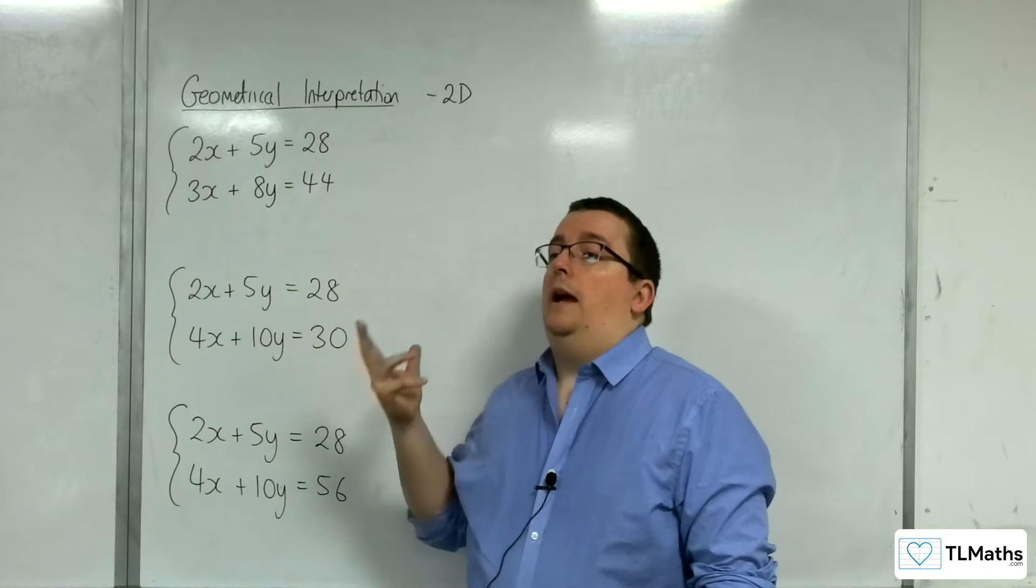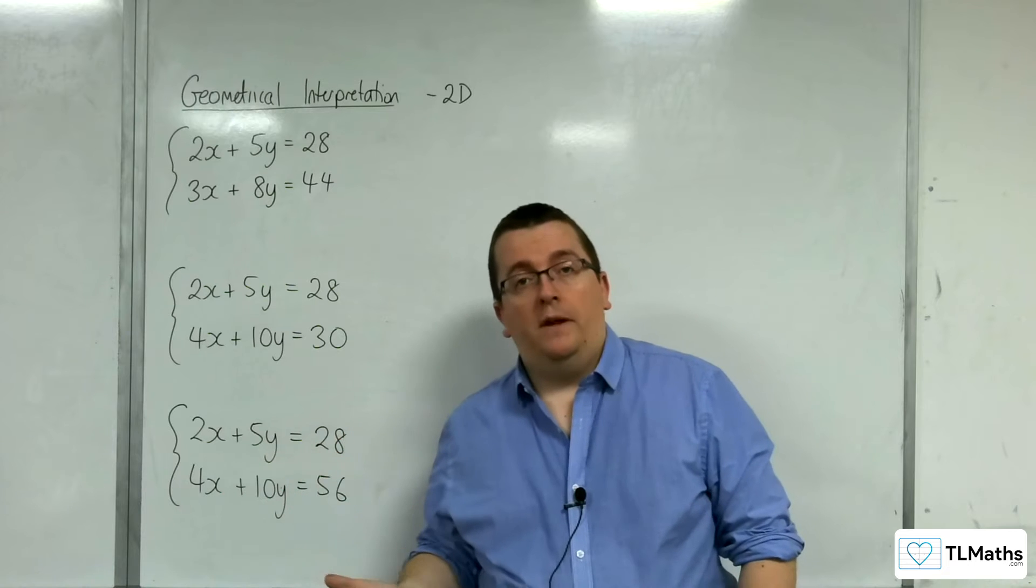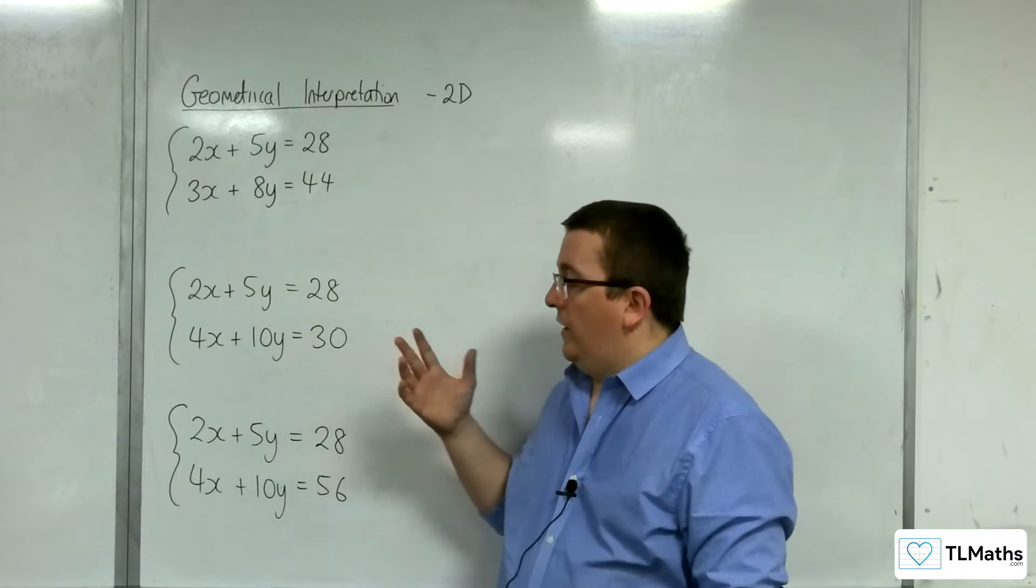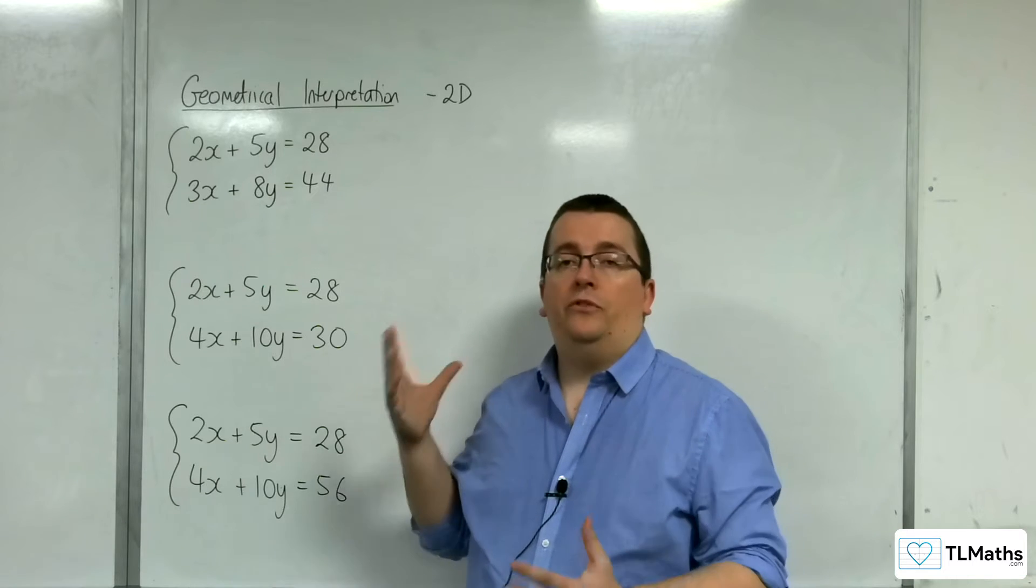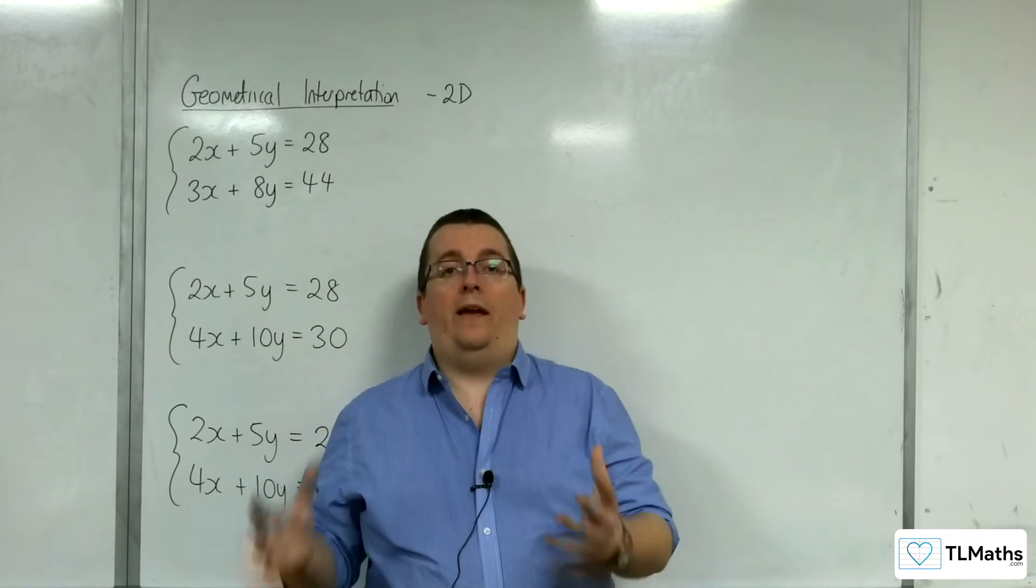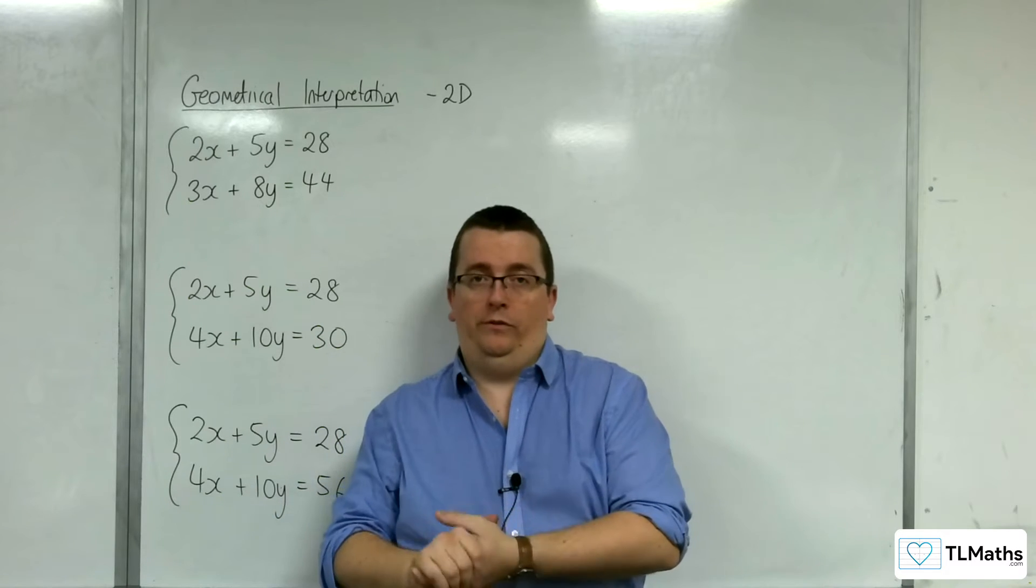Okay, or the two lines are going to be parallel and never meet. Or the third case is that the two lines are precisely the same thing. And so the two lines completely overlap and hence have an infinite number of solutions.